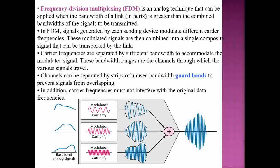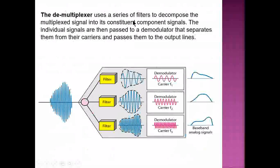Channels can be separated by strips of unused bandwidth called guard bands to prevent signals from overlapping. If the space between frequencies is very small, interference will occur. To avoid interference, the guard space must be sufficient. The carrier frequencies must not interfere with the original data. These guard bands are calibrated to ensure there is no signal overlapping — you must ensure enough guard space between signals so they do not interfere.